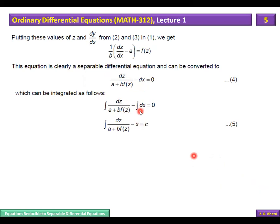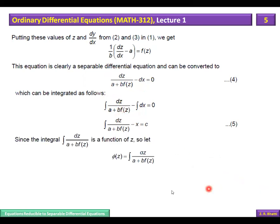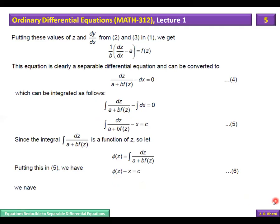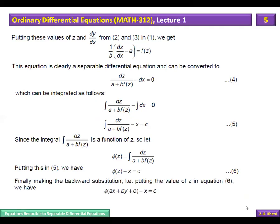After separating the variables and integrating the function of z, we give the integration result a new name, say φ(z). We substitute back the value of z = ax + by + c into the result to get the final answer. Substituting z back in gives us the solution in terms of x and y, equal to C.